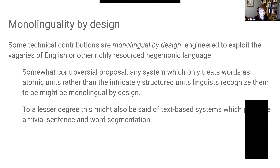Perhaps this will be controversial, but I would say that any system which treats words as atomic units, rather than as the intricately structured units that linguists recognize them to be, might be monolingual by design. If your system uses one-hot encoded features that are words, and that's all it uses to get a notion of what context is like, it might have this property. That works decently well in English and one or two other hegemonic languages that happen to be morphologically isolating. But it's unclear that it would generalize beyond that. Certainly, it's a very poor fit for a polysynthetic language.